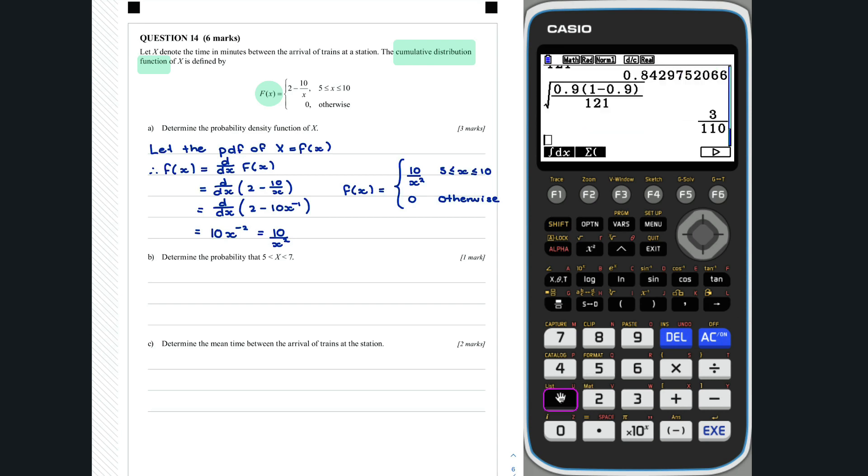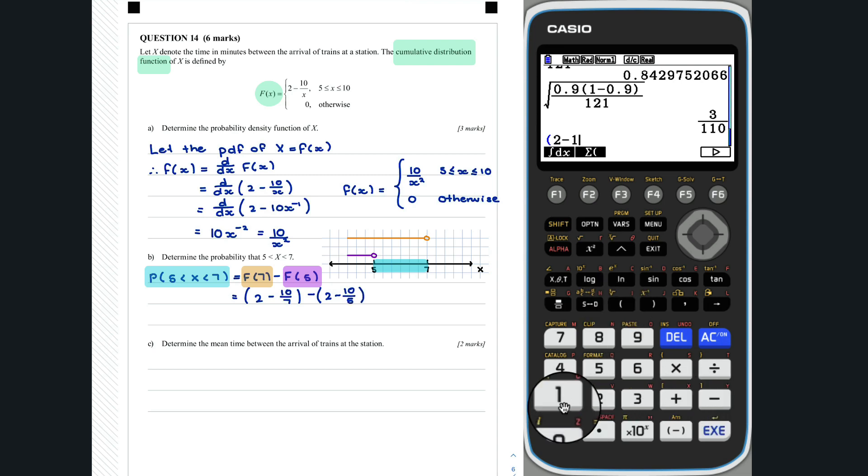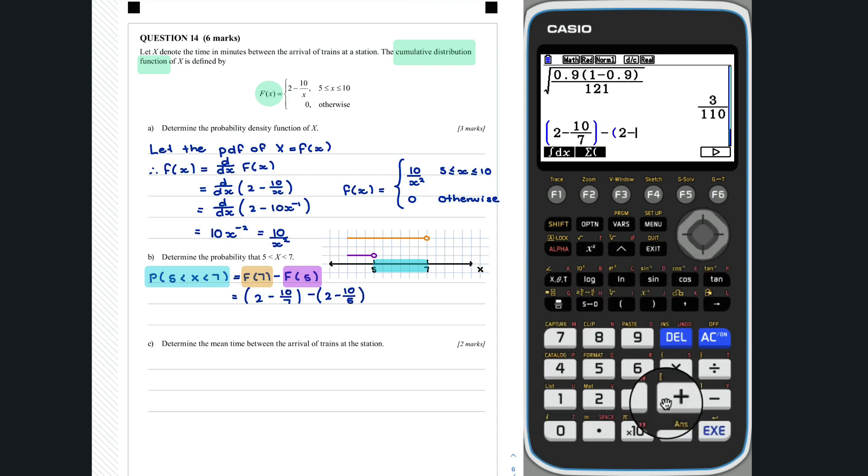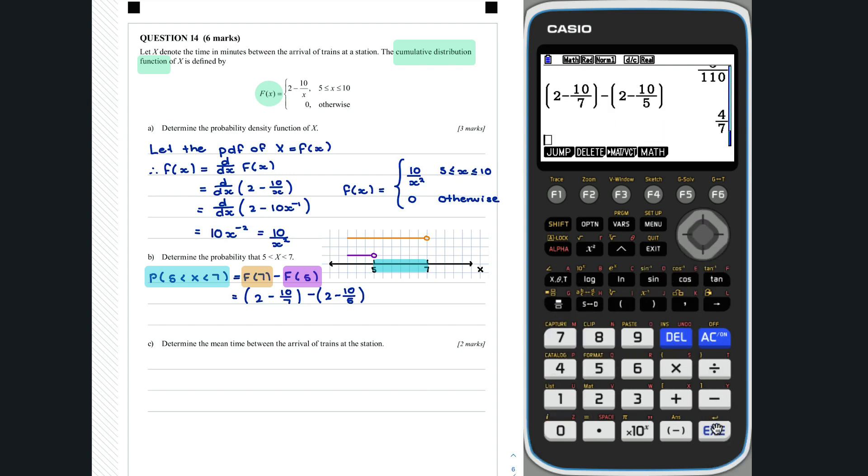Question 14b. In these type of questions, I like to draw a quick sketch of the region where the probability lies. This probability can be evaluated using the cumulative distribution function as follows. Thus, the probability that x lies between 5 and 7 is 4 sevenths.